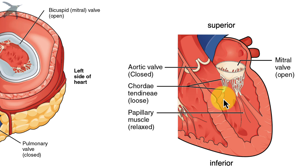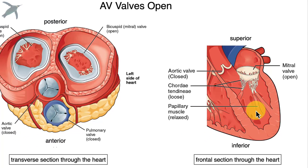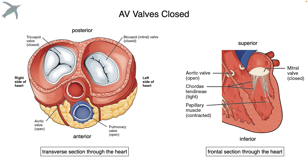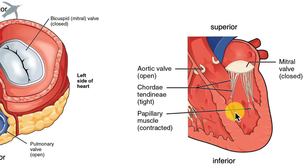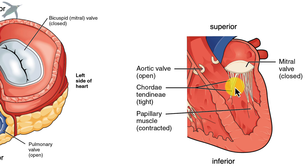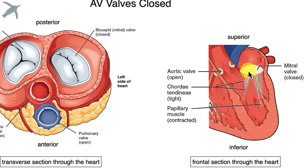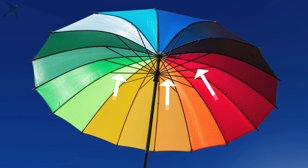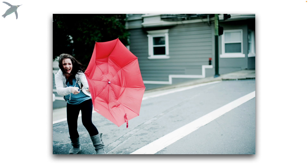The chordae tendinae are little heart strings, and they're anchored to papillary muscles in the floor of the ventricle. Everything is very loose when these valves are open. To close the valves, the papillary muscles contract, pulling on the chordae tendinae, closing and anchoring those valves so they can withstand the pressure. They are really tough fibers — an analogy would be the stays in an umbrella that generally keep the umbrella in the correct shape.